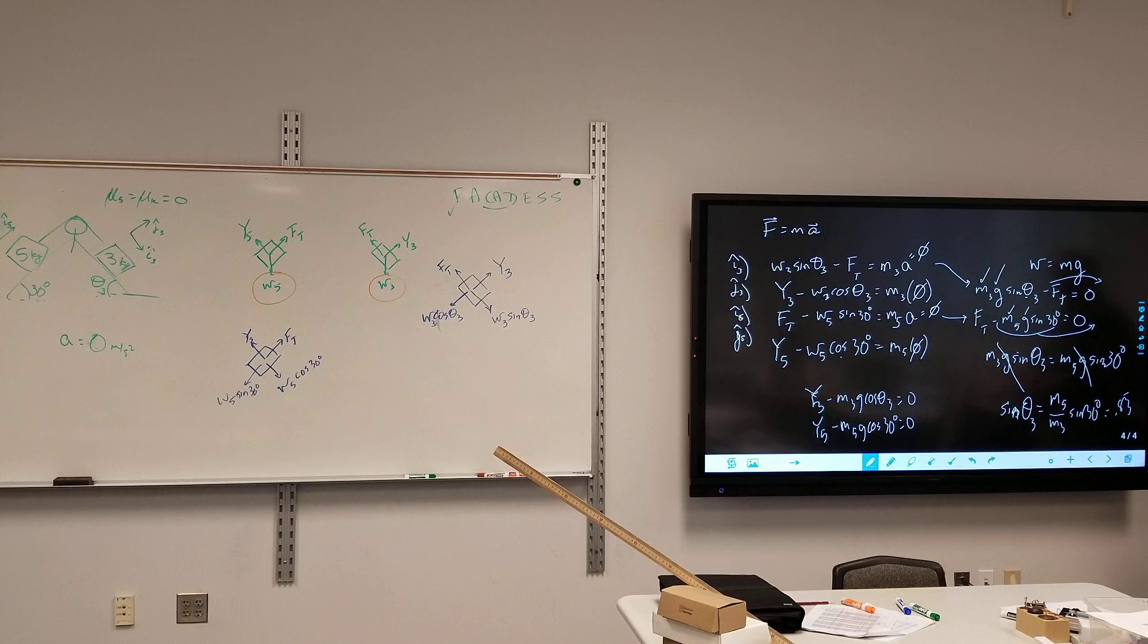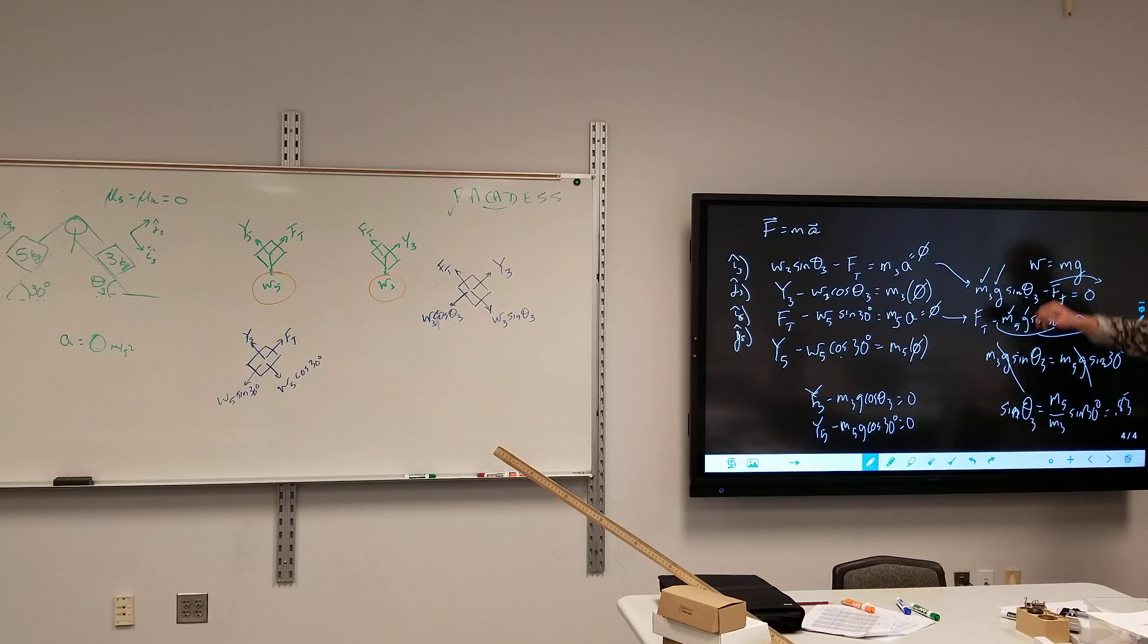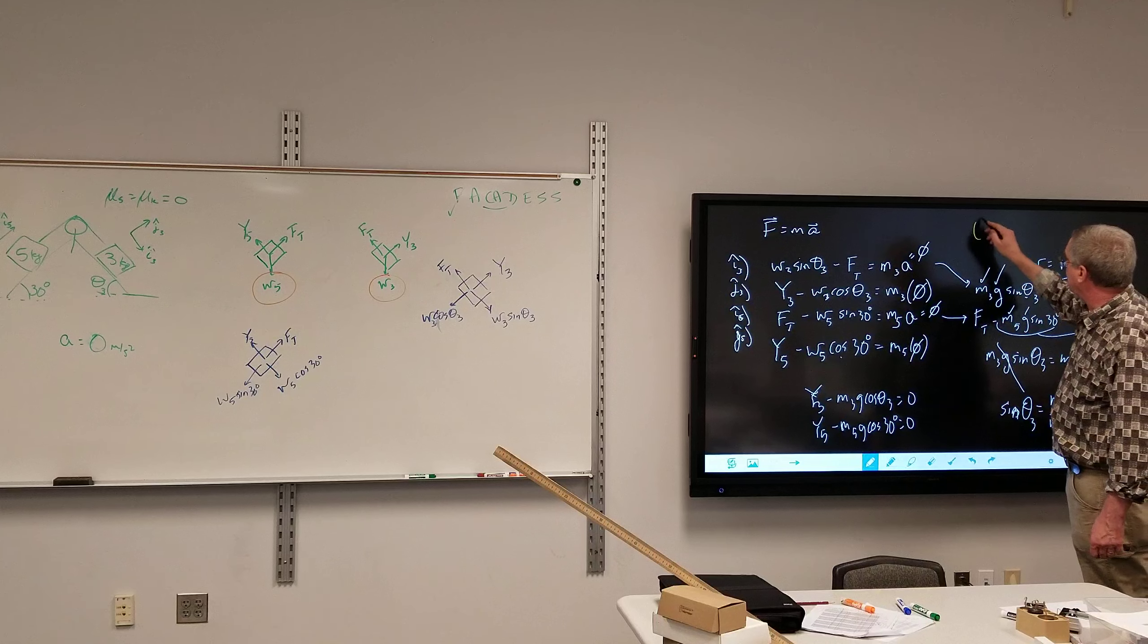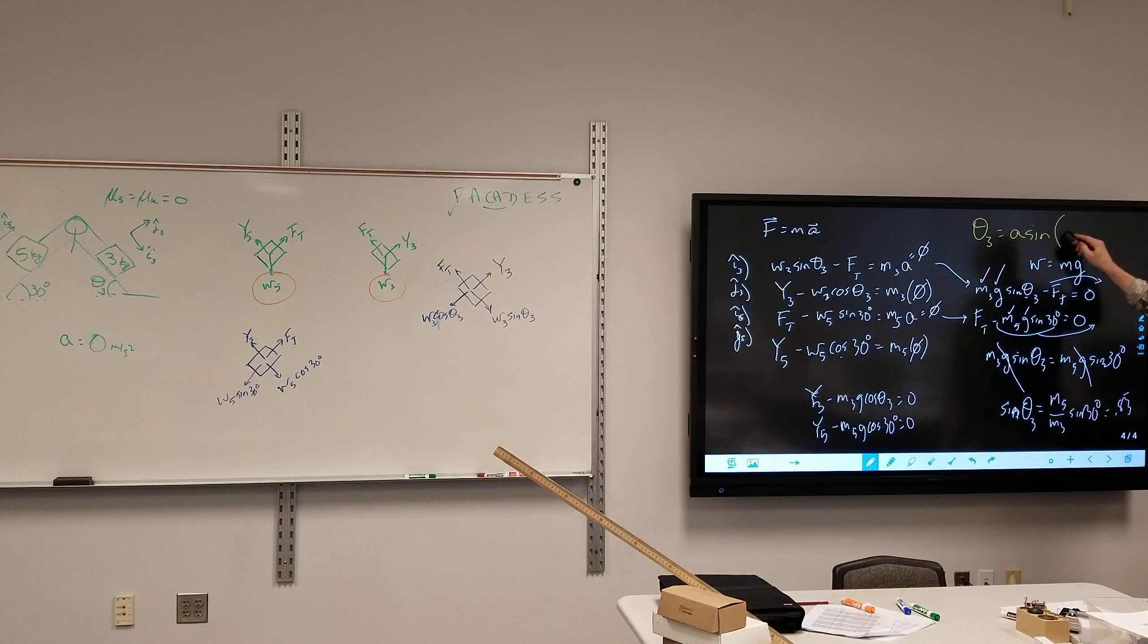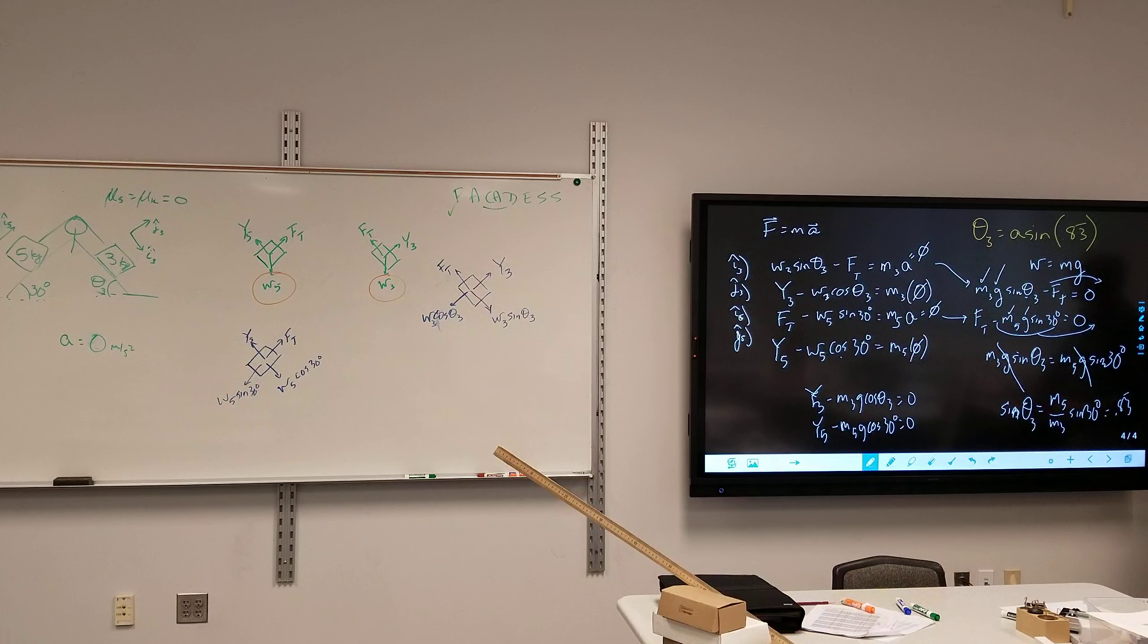So, what is theta 3? Theta 3 will be the arc sine of 0.83. 56.44. 56.44. 56.44. Yeah. And I acknowledge you did say degrees. There we go. Okay.